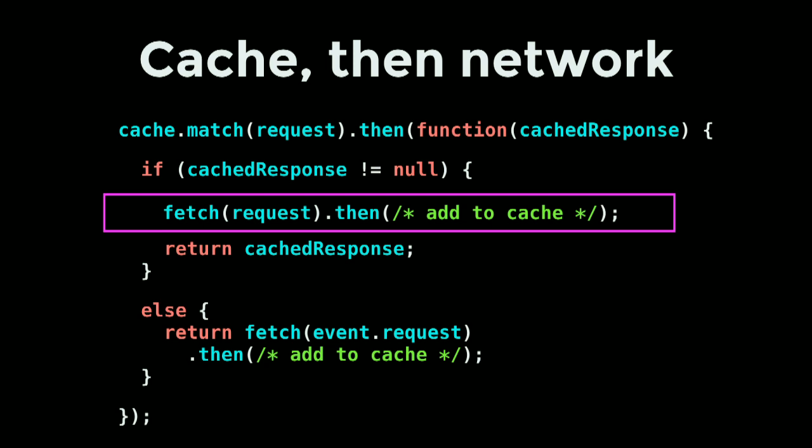The key thing here is we're not waiting for that background fetch to finish — we go straight to returning the cached response, giving us an instant response. The fetch is asynchronous; it happens after the user has already seen the page. This works great for CSS and images, where it doesn't matter much if we got a previous version. The next time the page is hit, we'll get an updated version.